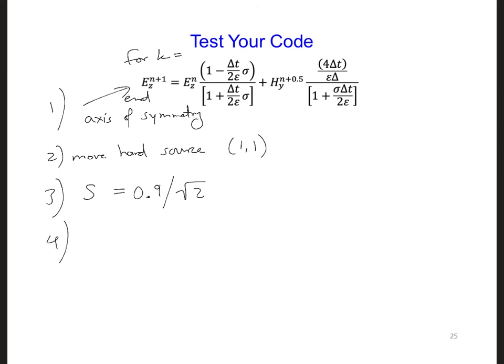Another thing is let's change our plot command so that we're looking at ez fields instead of hy fields. We only looked at hy to check for symmetry. And lastly, run your code nmax equal to 100 time steps so we can see if we can get the same result.